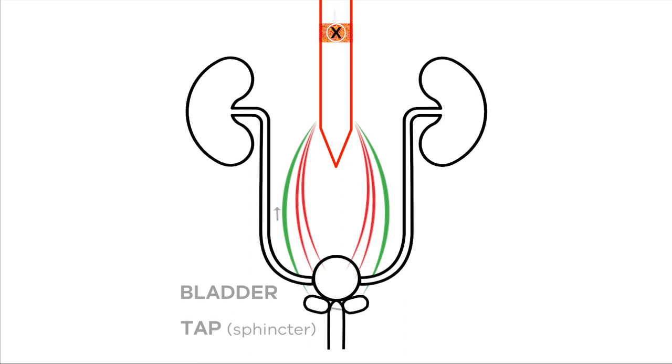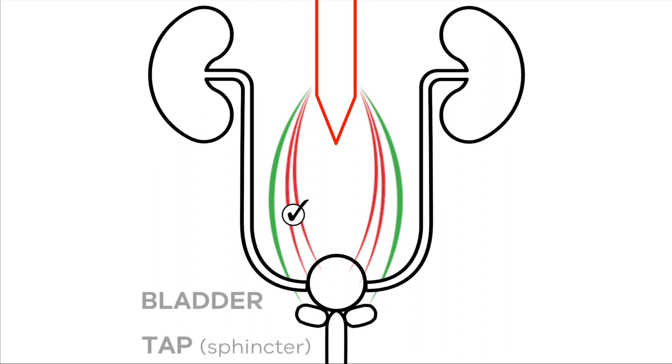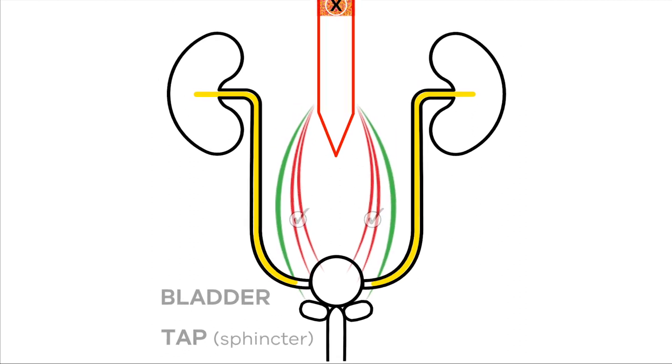The automatic nerves can work without being connected to the brain. The voluntary nerves don't work properly because they are no longer connected to the brain. The bladder is filling and the nerves allow it to fill and stay relaxed.